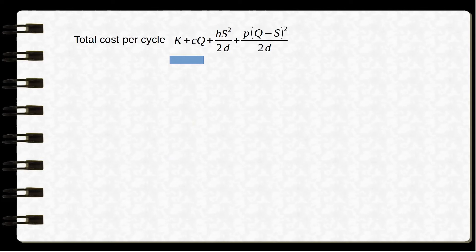Now the total cost per cycle is K plus CQ, where K is the setup cost, C is the cost per unit, and Q is the number of units ordered. HS squared by 2D is the holding cost, and P(Q minus S) squared over 2D is the shortage cost.